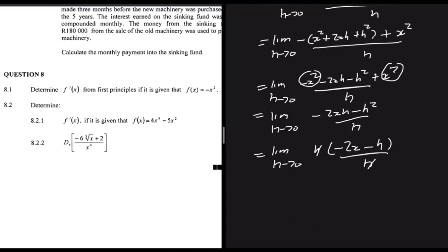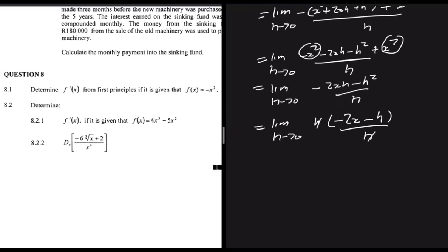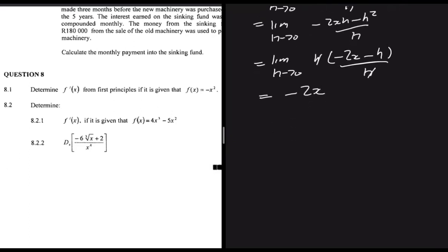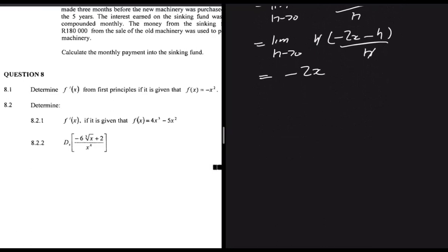Factoring out h: lim(h→0) h(-2x - h)/h = lim(h→0) (-2x - h). As h → 0, this gives f'(x) = -2x.